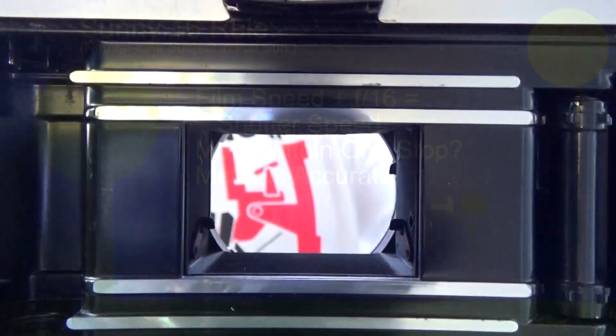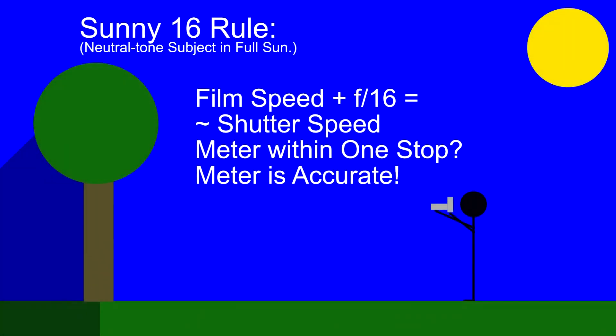If the curtain is working, the next thing to do is test the light meter against the Sunny 16 rule. If the exposure from the meter is within a stop of what the Sunny 16 guidance would be for a proper exposure, then your meter is fine.